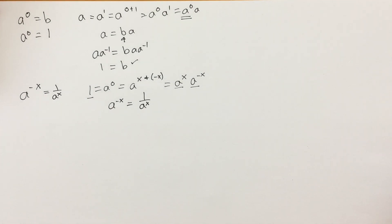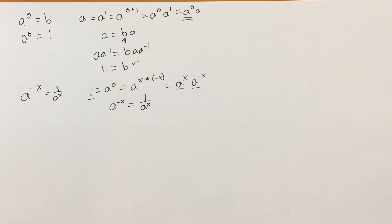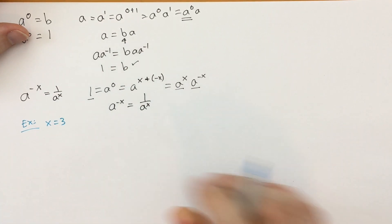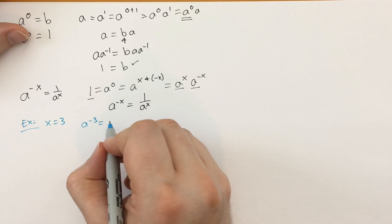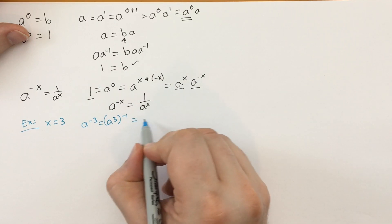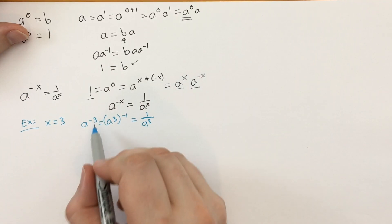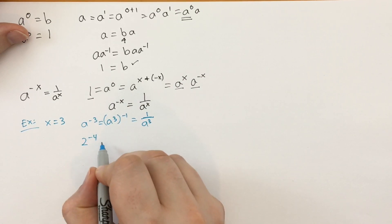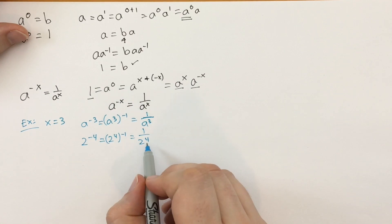Example: let x equal 3. Then a to the minus 3 equals a to the 3 to the minus 1 power — because multiplying minus 1 and 3 gives minus 3 — which equals 1 over a cubed. So a negative exponent moves the base to the denominator. For instance, 2 to the minus 4 equals 1 over 2 to the 4. Taking a negative exponent is taking the reciprocal.